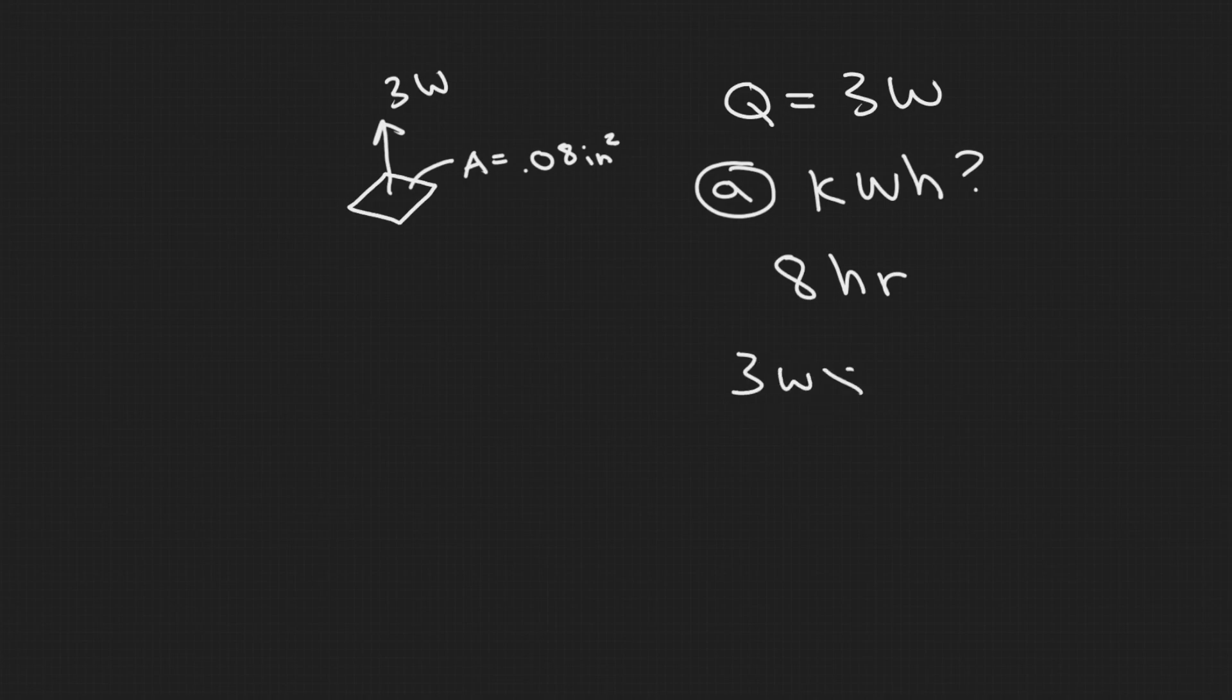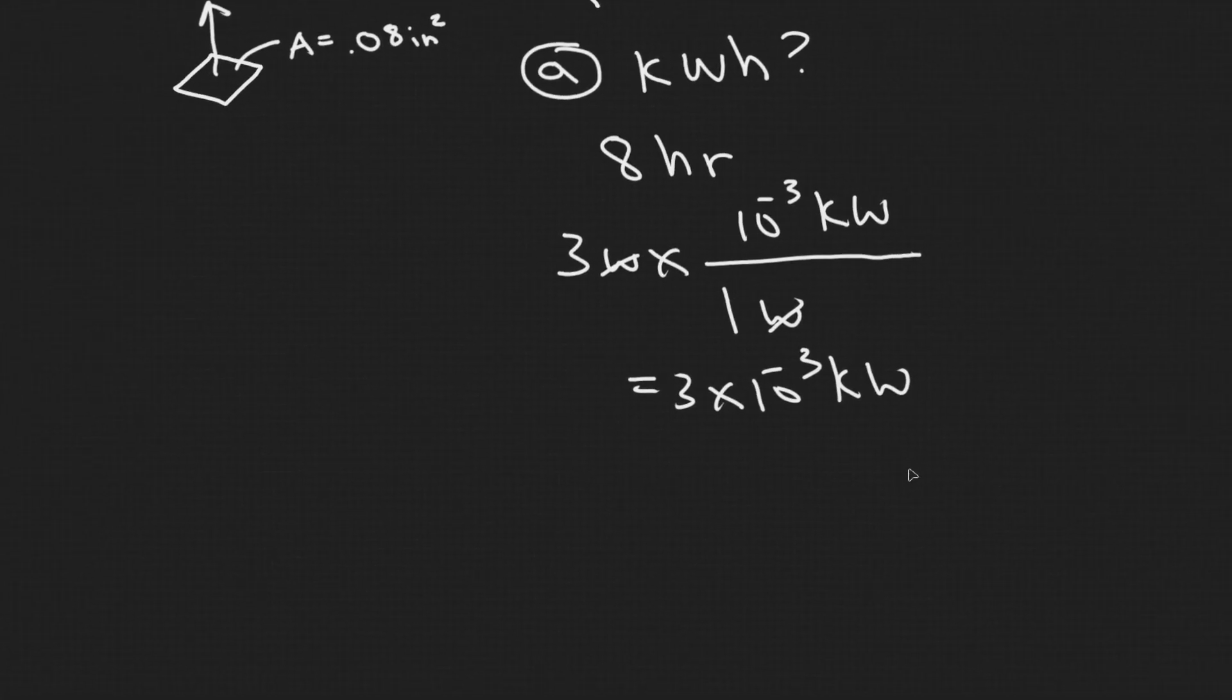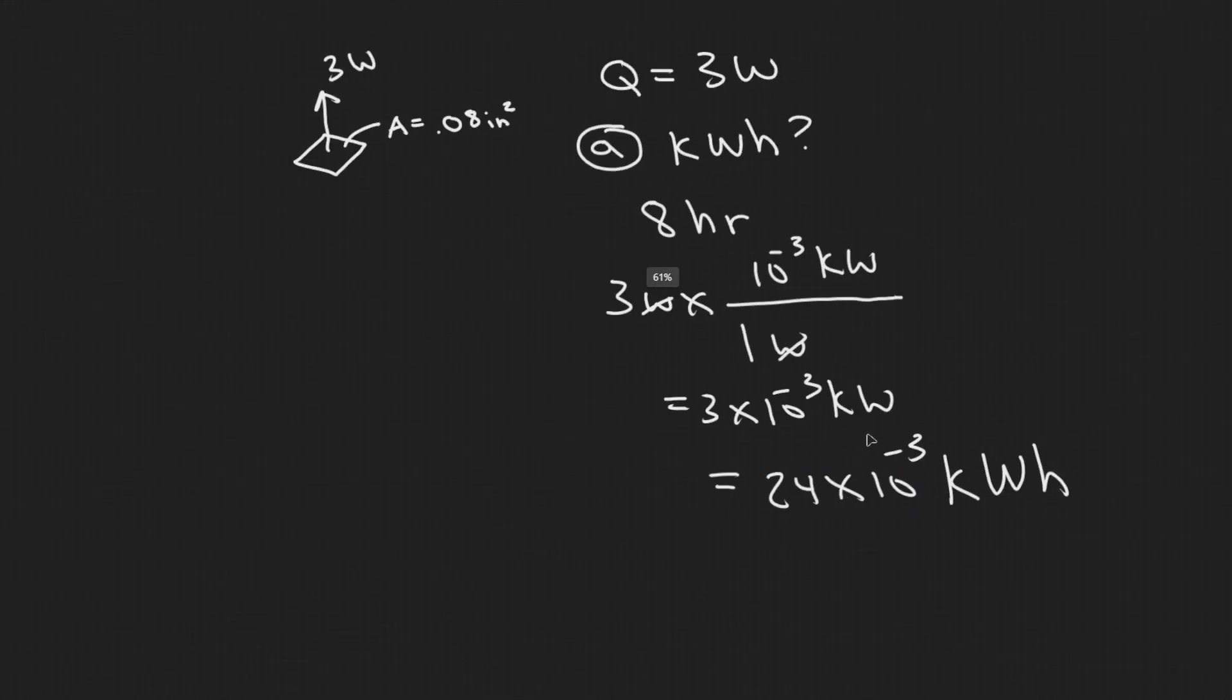So 3 watts to convert, you want to just multiply it by this right here. So 1 watt is the same as 10 to the minus 3 kilowatts. So it's basically just 3 times 10 to the minus 3 kilowatts. But we want kilowatt hours. So in order to do that, we basically can just multiply it by 8. So you're just going to have 24 times 10 to the minus 3. And see how that works. We're doing kilowatts times hours.